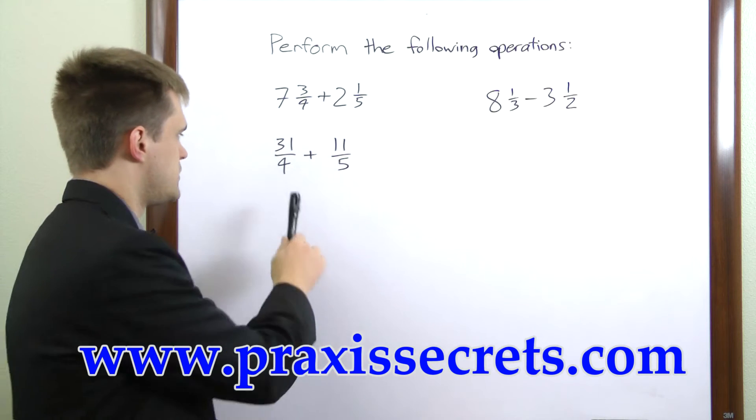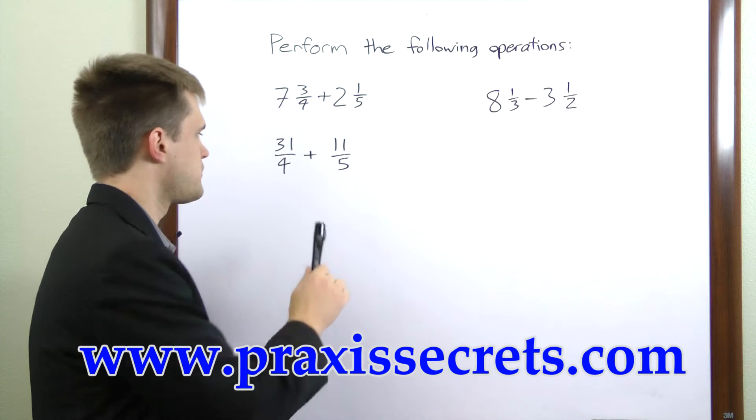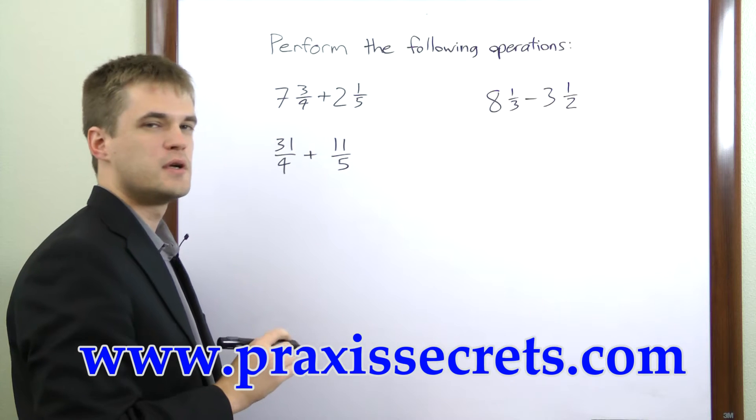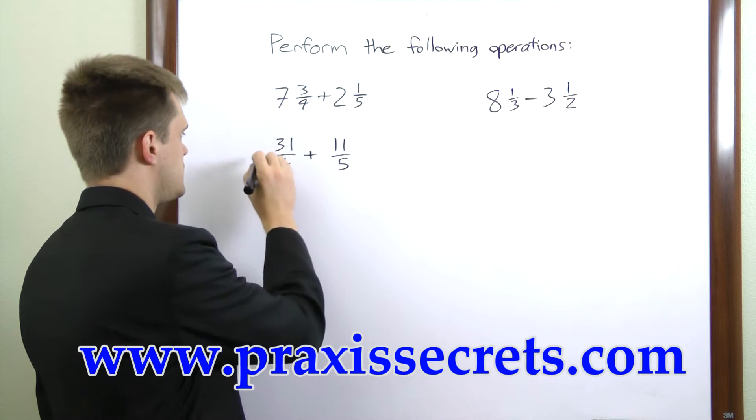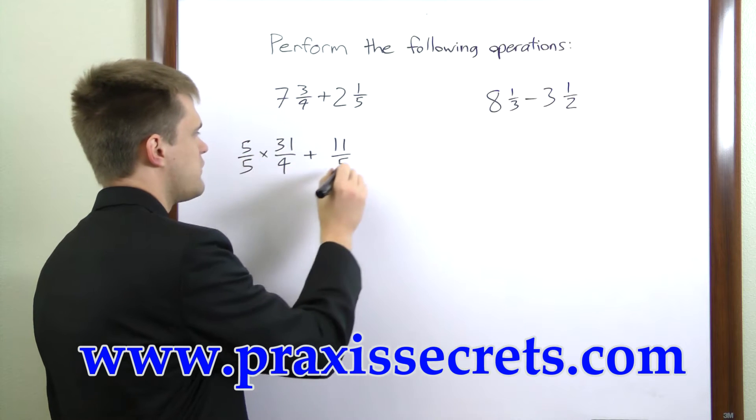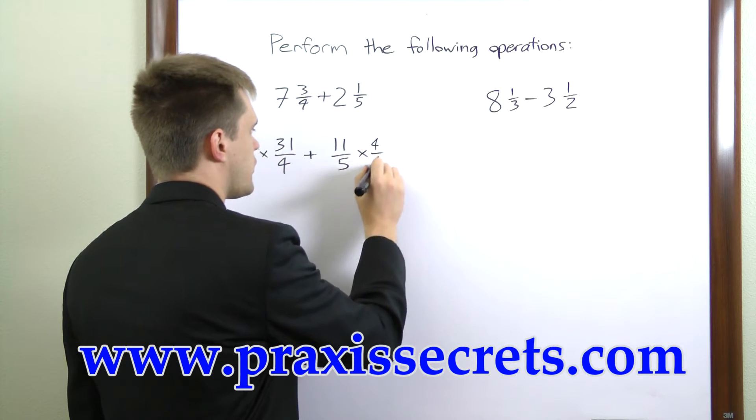Now these do not have a common denominator so we need to create one. The least common multiple between 4 and 5 is 20 so we'll multiply these to get a denominator of 20. The first fraction by 5 over 5 and the second fraction by 4 over 4.